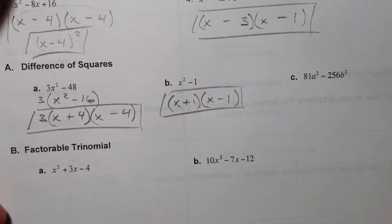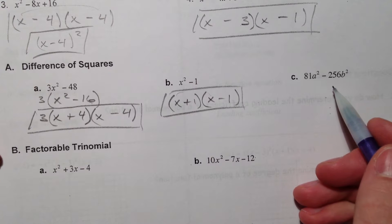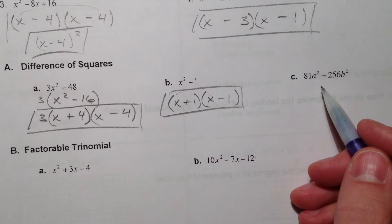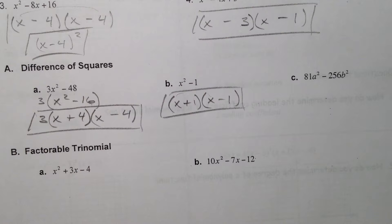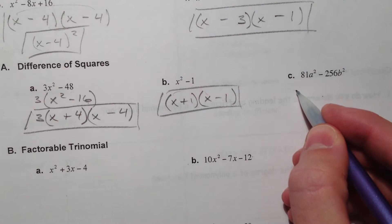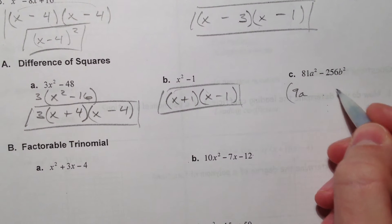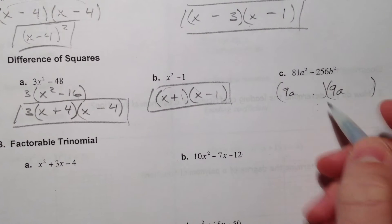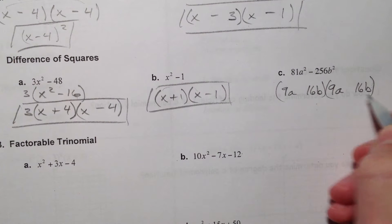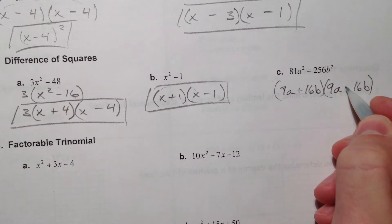It can also work this way if we have a couple different variables in here. But see, you have to know your perfect squares, right? So is there anything that goes into both 81 and 256? 256 is 16². So if we do 9a and 9a, that'll give us 81a². And if we have 16b and 16b, we can do plus minus.